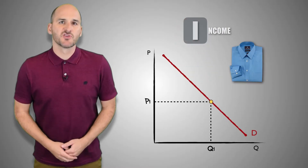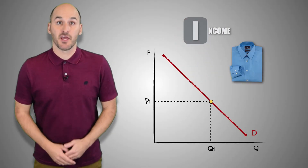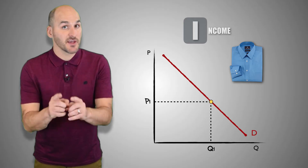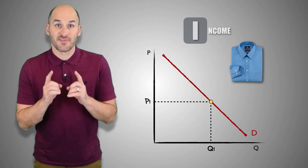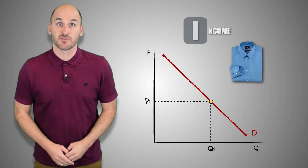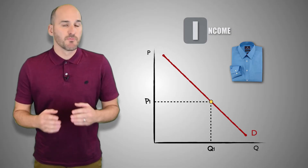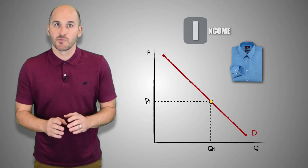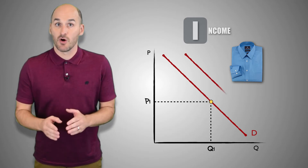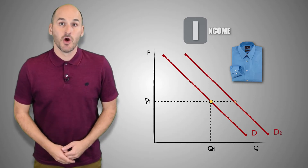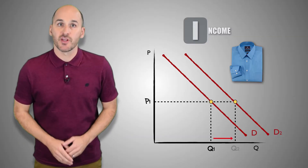A change in consumer income can fundamentally change the demand for a good or service. Suppose a consumer gets a job and receives a pay increase, leading to an increase in their disposable income. Now suppose that consumer is looking to purchase dress shirts for the new job. With more disposable income to spend, the consumer will buy greater quantities of dress shirts at every price level — an increase in income will cause an increase in demand.